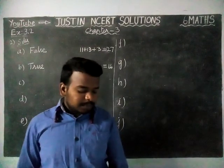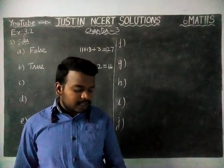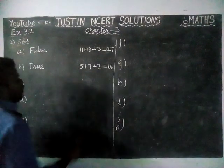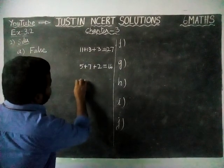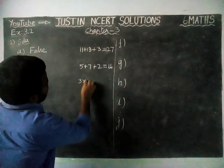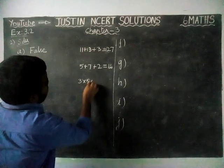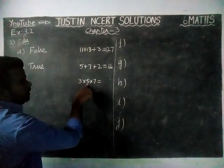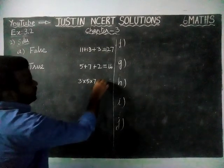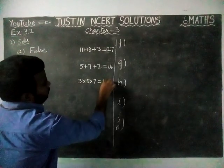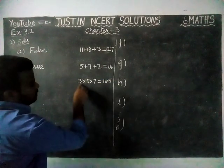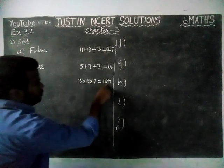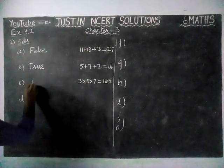Option C: the product of 3 odd numbers is odd. We are going to take 3 into 5 into 7. 3 fives are 15, and 15 sevens are 105. The product of 3 odd numbers gives an odd number as the answer, so this statement is true.